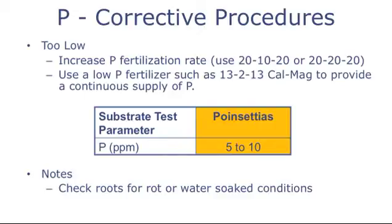The simple answer is to increase the phosphorus fertilization rate. This can be done with a single application of 20-10-20. For example, if 200 ppm nitrogen is applied, that will provide 44 ppm phosphorus. For continuous fertilization, a low phosphorus formula such as 13-2-13 CalMag can also be used. A good target level of phosphorus in the substrate is between 5 and 10 ppm, especially if you're trying to limit the amount of stem stretch on poinsettias.